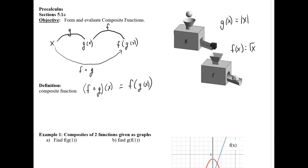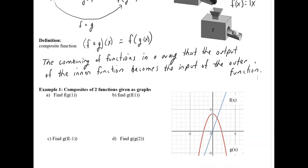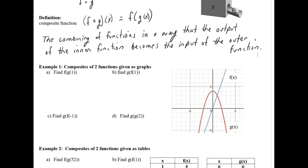F is the outer function, so our notation in this example is consistent with the diagram. Now let's look at this from a graphical perspective. We're looking at a graph with two functions: the blue function is f of x and the red function is g of x.